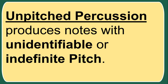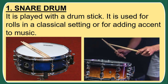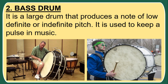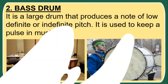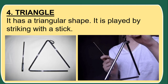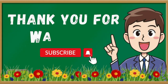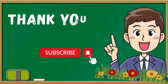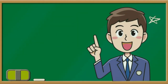Unpitched percussion produces notes with unidentifiable or indefinite pitch. 1. Snare drum — played with a drumstick; used for rolls in a classical setting or for adding accent to music. 2. Bass drum — a large drum that produces a note of low definite or indefinite pitch; used to keep a pulse in music. 3. Cymbals — used in pairs, consisting of thin, normally round plates of various alloys; they produce sharp, clashing or crashing sounds. 4. Triangle — has a triangular shape and is played by striking with a stick. Thank you for watching this video; I hope you learned something today. Feel free to like, share, and subscribe for more educational content.